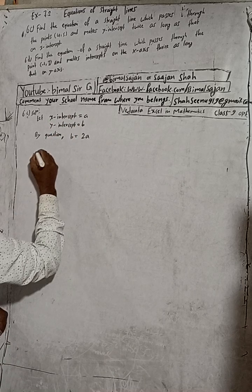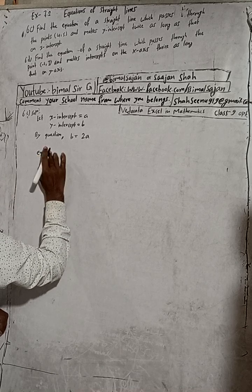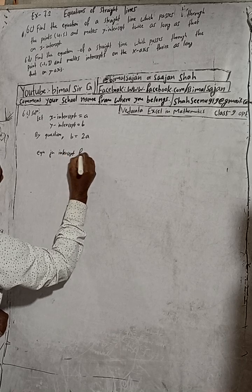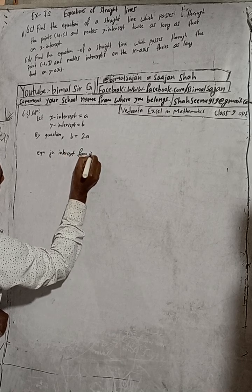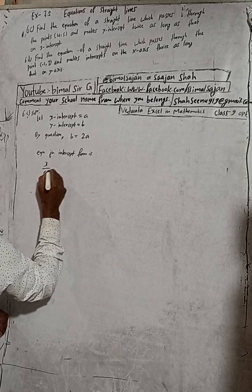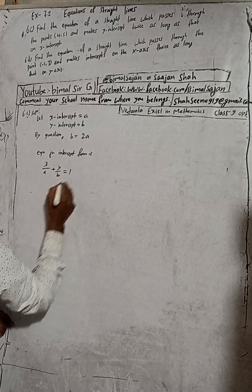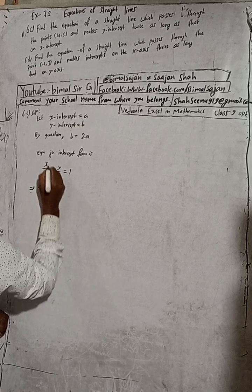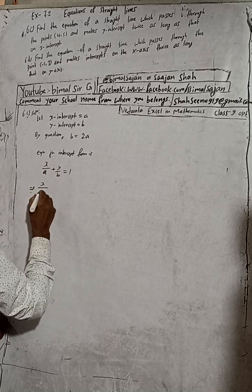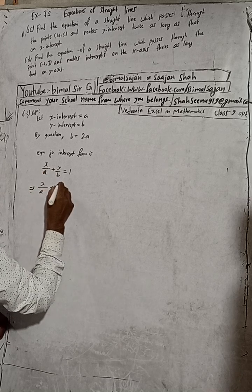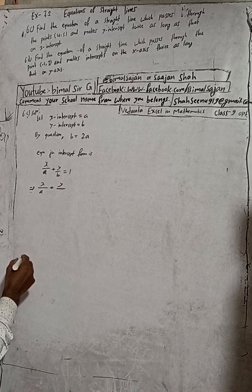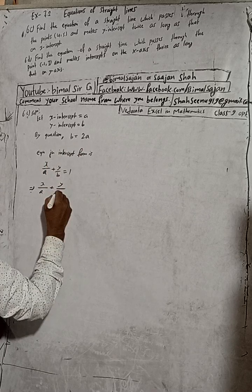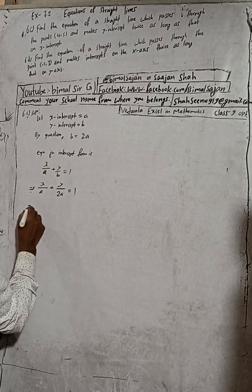Now, equation of the line. Equation in intercept form is x by a plus y by b is equal to 1. This implies x by a plus y by b. B value is how much here? 2a. So b in intercept is equal to 1.